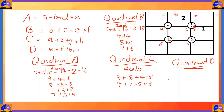Quadrant D is made up of cells e plus f plus h plus i. We know that cell f is equal to 1, so the other three cells — e plus h plus i — must be equal to 25 minus 1, which is equal to 24. The only option is 9 plus 8 plus 7.